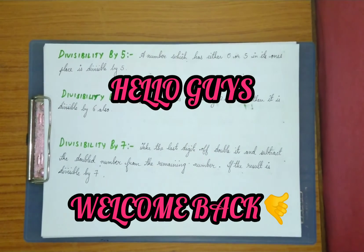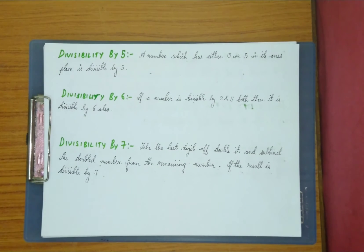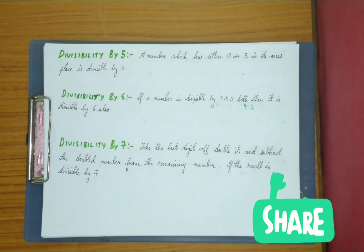Hello guys, in this video we are going to talk about the divisibility test of the next three numbers — that is 5, 6, and 7. We'll start with 5, as it is a bit easier.